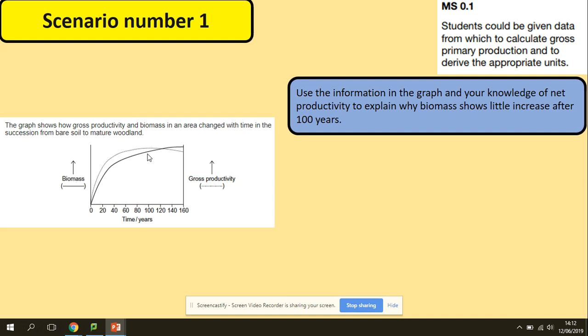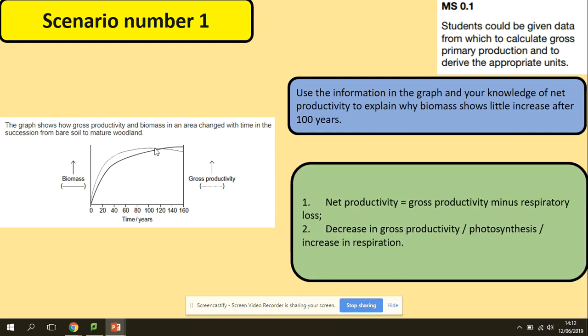What increases here? We've got the gross productivity, but biomass will start decreasing and shows only little increase after 100 years. So again, thinking about the equation, how can you then use the equation? Net primary productivity equals gross minus respiration. How is this going to then show only a little increase? There could be decreased in the gross productivity. So if you will have a lower number here minus respiration, the total net will obviously decrease, will be little increase only.